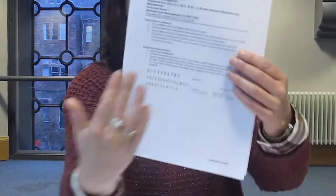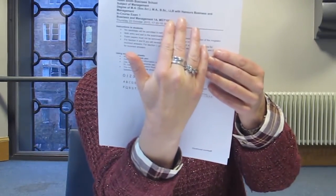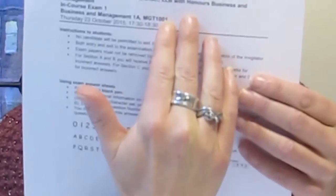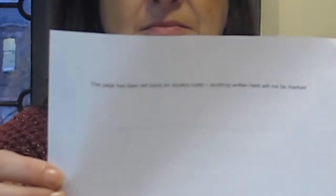The exam paper provides details of the course code and will start with either ACFIN, ECON or MGT. The second page of the exam paper has been left blank for students to use as scribble paper.